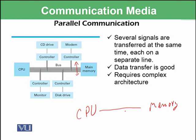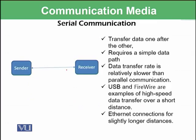Parallel communication means that you have parallel paths available — you can see there are many small paths available. On those parallel paths, data is transmitted efficiently. However, it requires a complex architecture because you need to design multiple paths, not just one.